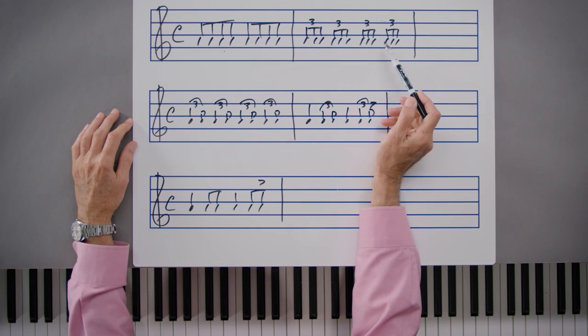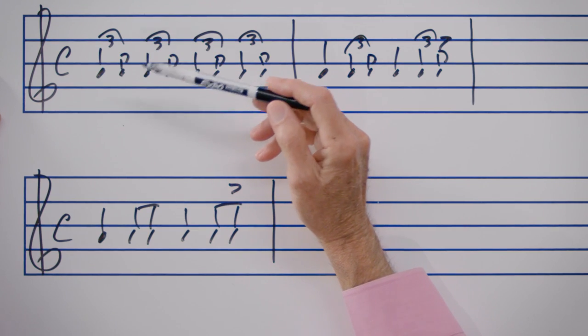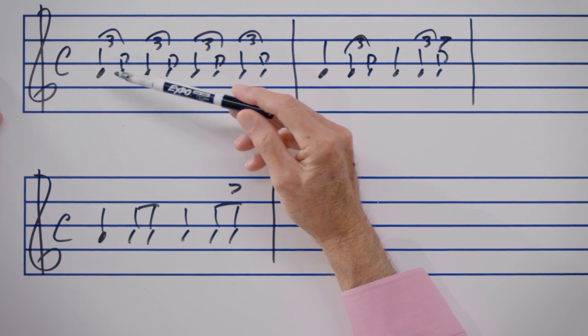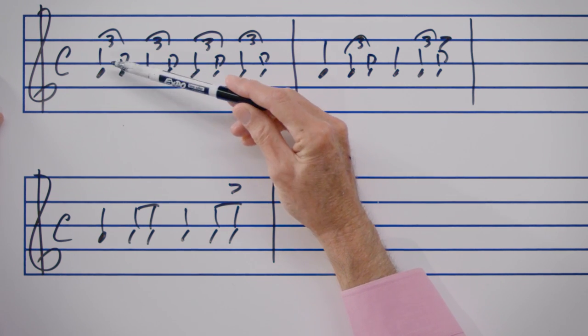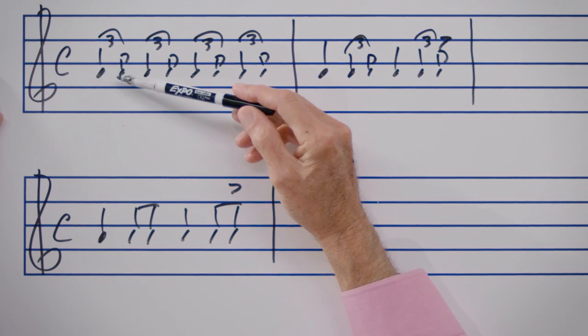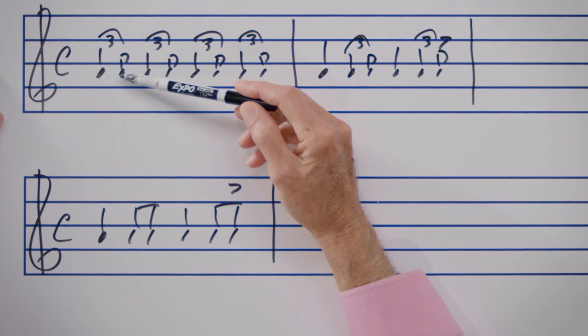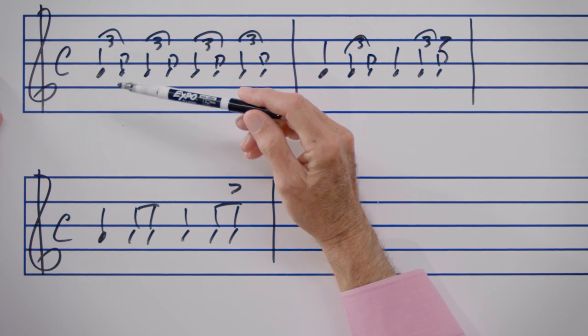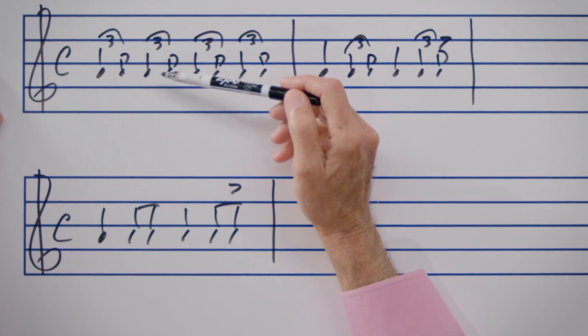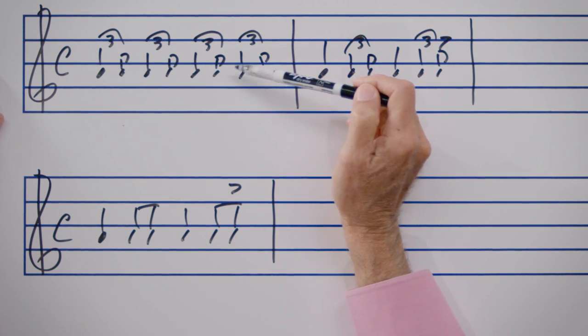The reason we're looking at eighth note triplets here is because swing eighth notes are roughly notated as a quarter and an eighth note under a triplet sign. This means that the first of the two attacks on each beat is roughly twice the duration as the second. If we had a quarter and an eighth under each triplet sign on each beat in four-four...